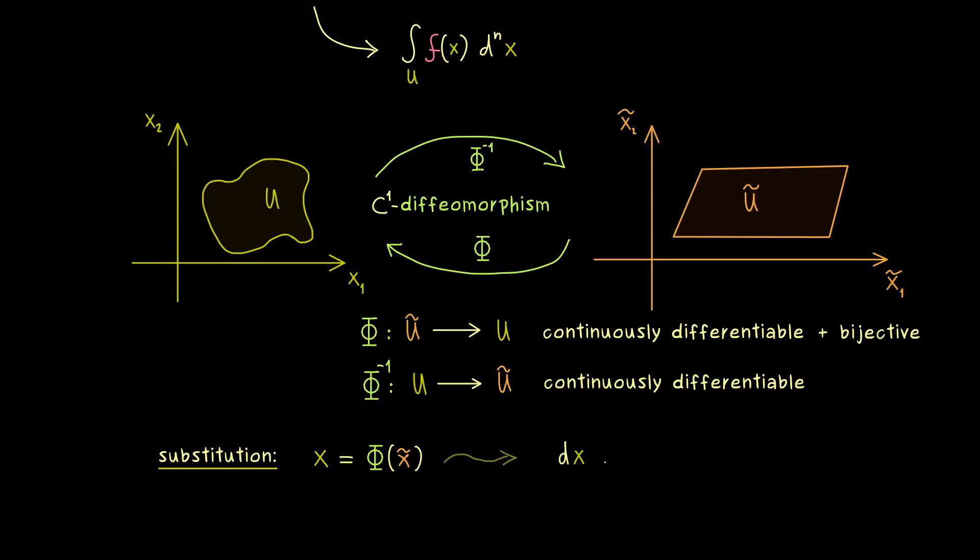And there we already know how it works in one dimension because there is a nice mnemonic to remember it. Namely the dx in the integral becomes a derivative times dx tilde. More concretely we have the derivative of Phi at x tilde times dx tilde. And there is a nice way to remember this, when you say that the derivative of Phi is simply dx over dx tilde. And then in the next step you put both things into the integral and you have the whole substitution formula.